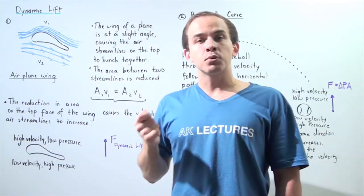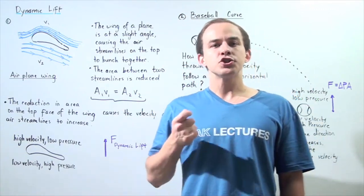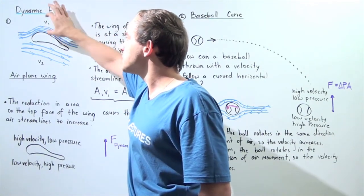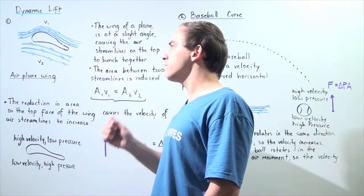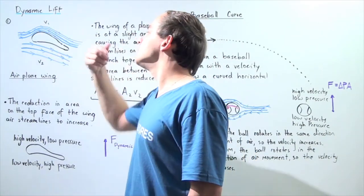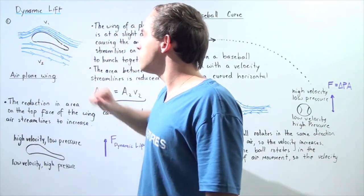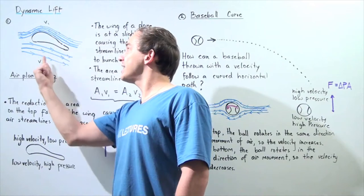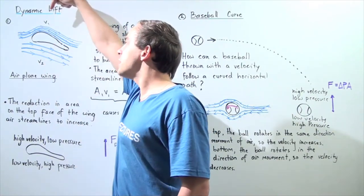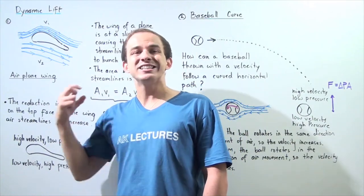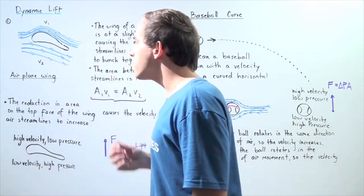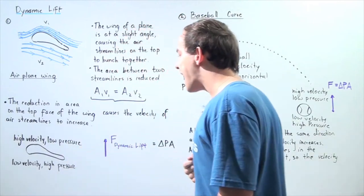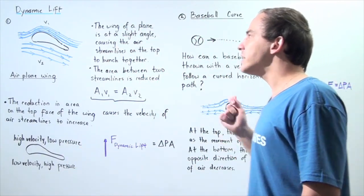From Bernoulli's principle, where the velocity is higher, the pressure is lower. Because the velocity of the air on top of the wing is higher, the pressure must be lower. And because on the bottom portion of the wing the area is higher, the velocity is smaller, so the pressure is higher on the bottom portion. This means there is a higher pressure pushing on the wing from the bottom than from the top. That pressure difference between the top and bottom portion of the wing creates a net force pointing upward along the y-axis, and this net force is known as dynamic lift.